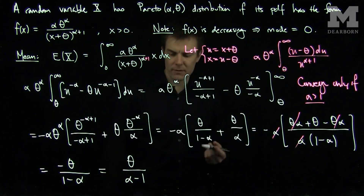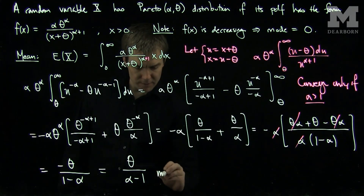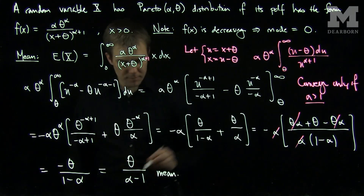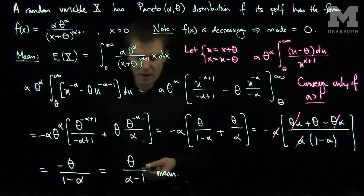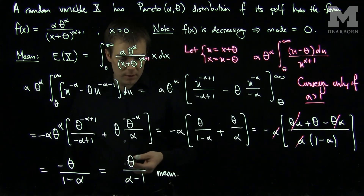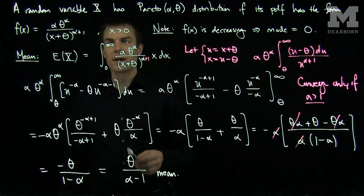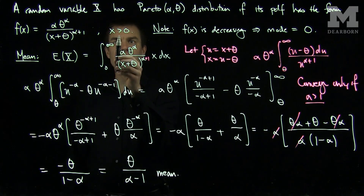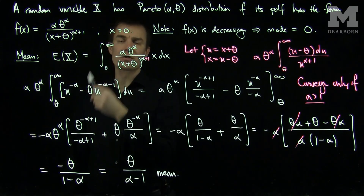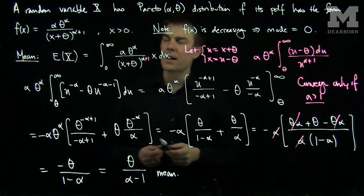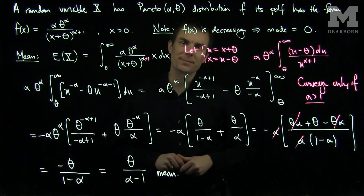And this is the mean of the Pareto distribution. Oftentimes in other formulations of the Pareto distribution, we'll see an alpha on top, and that's if the random variable does not have this theta in the denominator and the support starts when x is larger than theta. Thank you very much.